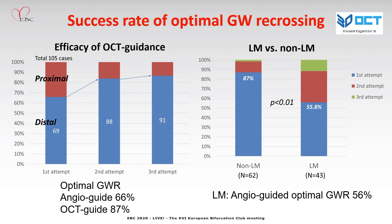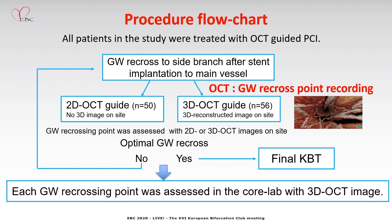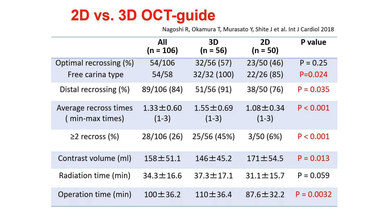In the left main bifurcation, first attempt succeeded in optimal wiring in only 56%. In this study, we conducted a sub-study comparing 2D OCT guidance versus 3D OCT guidance. About half of the cases, we used 3D OCT software on site. In terms of optimal recrossing, complete success was achieved in 3D OCT guidance versus 85% in 2D OCT guidance. In the whole cohort, distal recrossing was achieved in 91% in 3D OCT guidance and 76% in 2D OCT guidance. Average recrossing time was 1.6 versus 1.1 attempts, and more than 2 recrossing attempts were required in about half of cases with 3D OCT guidance, and procedure time was longer by 15 minutes in the 3D OCT group.